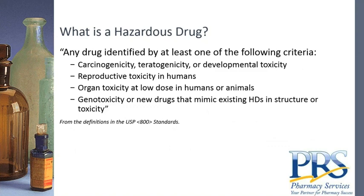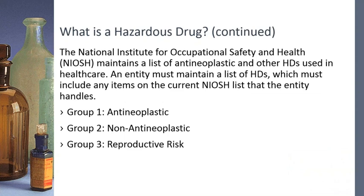USP provides a definition of hazardous drugs, and NIOSH — the National Institute of Occupational Safety and Health — maintains a list of antineoplastic and other hazardous drugs used in healthcare. NIOSH breaks drugs into three groups: Group 1 is antineoplastic, Group 2 is non-antineoplastic, and Group 3 is drugs with only reproductive risk. Groups 1 and 2 may also have reproductive risk but additionally carry other risks beyond just reproductive risk.